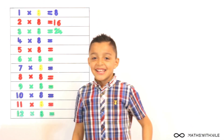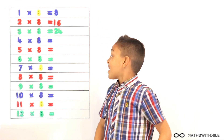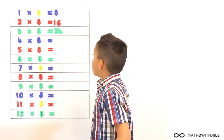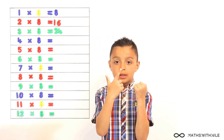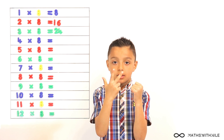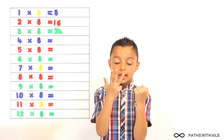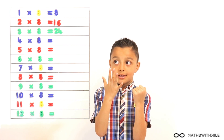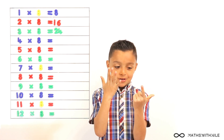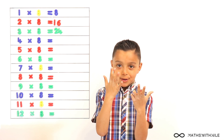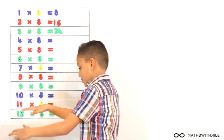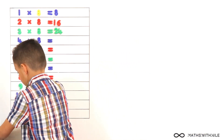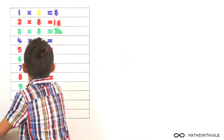4 times 8? 4 times 8. 24, 25, 26, 27, 28, 29, 30, 31, 32. Brilliant. So 4 times 8 is 32.